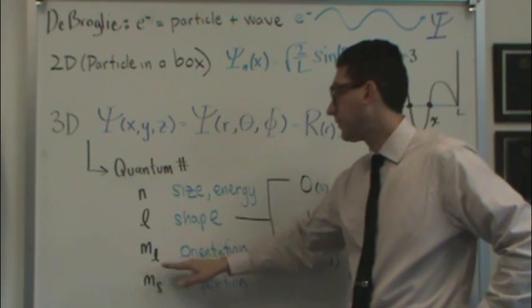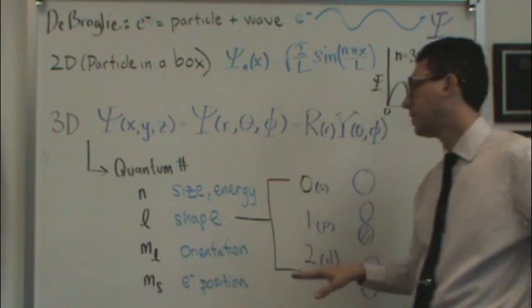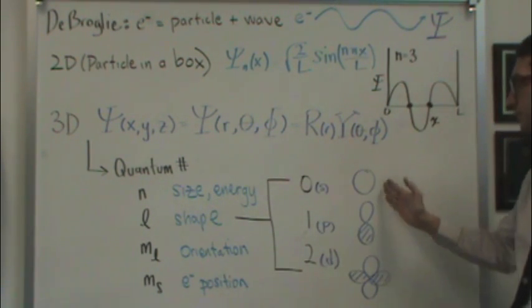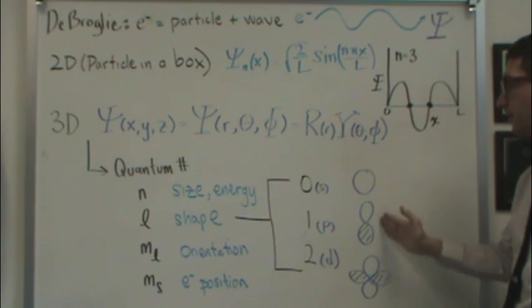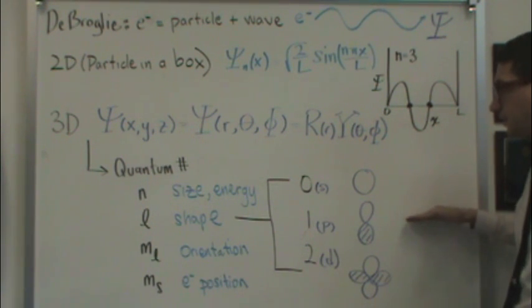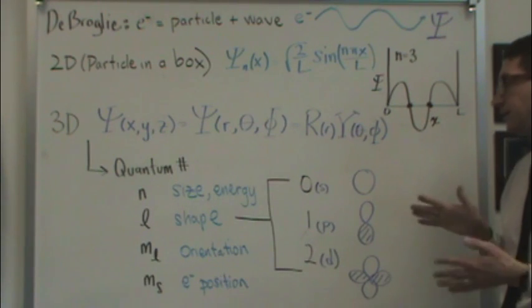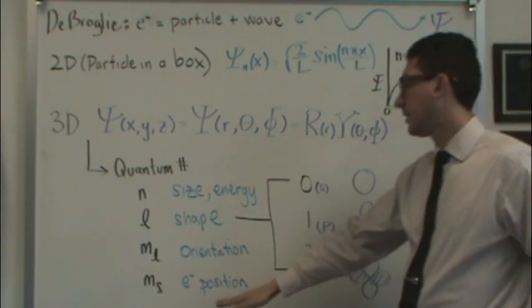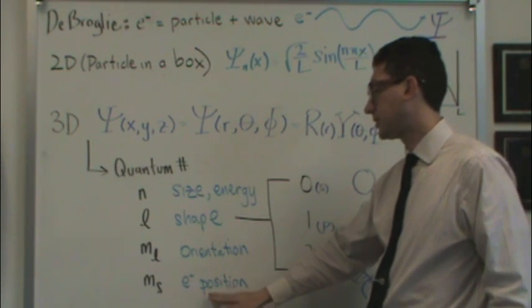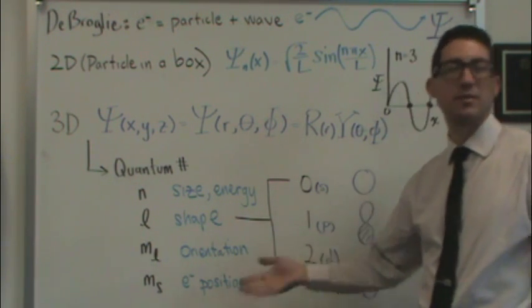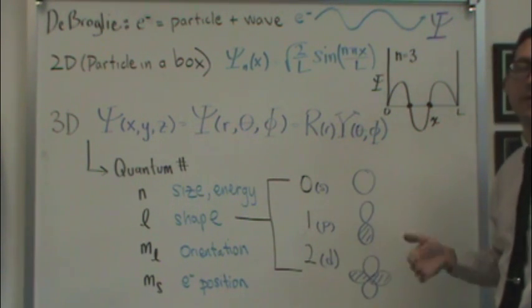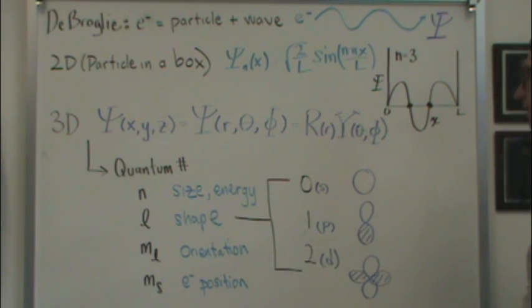And then finally, m sub l tells you about how these are oriented in space. So, for example, if there's a P orbital vertical, is this function horizontal, etc. It could be oriented different ways. And then, finally, m sub s, you'll see ultimately has to do with, the best word I can think of is position, or if it's pointed up or down. And we'll talk about that in lecture.